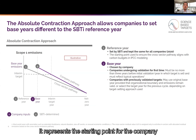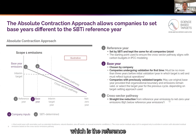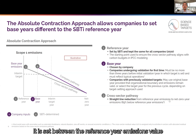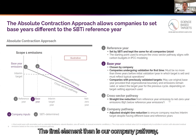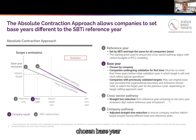The base year represents the starting point for the company's emission reduction pathway. The third element is the cross-sector pathway, which is the reference Scope 1 emissions reduction pathway derived from global 1.5-degree scenarios. It is set between the reference year emissions value and the allocated residual emissions at the net zero year. The final element is the company pathway, which is a company-specific Scope 1 emission reduction pathway that may differ from the cross-sector pathway, and the company's chosen base year may be different from the 2020 reference year.